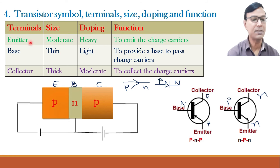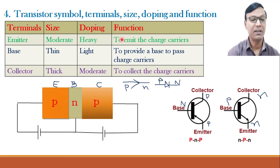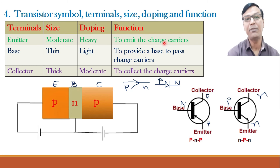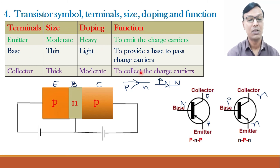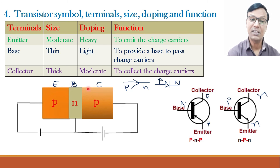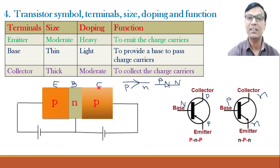Let us understand the terminals of a transistor. A transistor has got three terminals: emitter, base, and collector. As the name suggests, emitter is the one that emits charge carriers — it may be electrons or holes as the majority carriers. If it is a PNP transistor it will be emitting holes, and if it is a NPN transistor it will be emitting electrons. Base is the one that provides a base for the charge carriers to pass to the collector. And collector, as the name suggests, collects — its function is to collect the charge carriers.